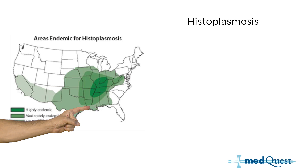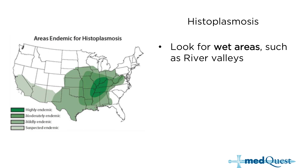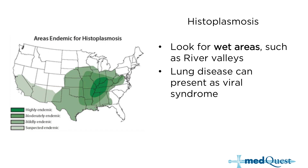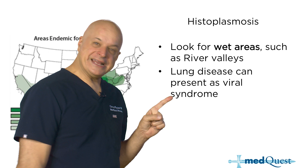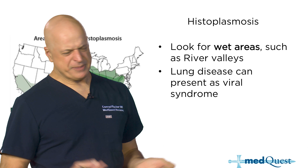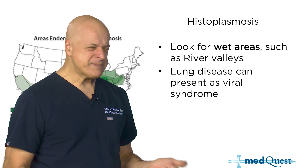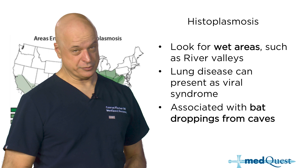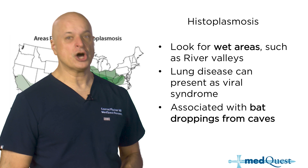Histoplasmosis is found where it's wet — the Ohio and Mississippi River Valley, though it can be any river valley. In immunocompetent people, histoblasto-cryptococci all present as a viral syndrome: aches and pains, a dry cough, maybe a little shortness of breath, myalgias — and it goes away on its own. It doesn't disseminate to the skin, bone, or brain unless you're immunocompromised.